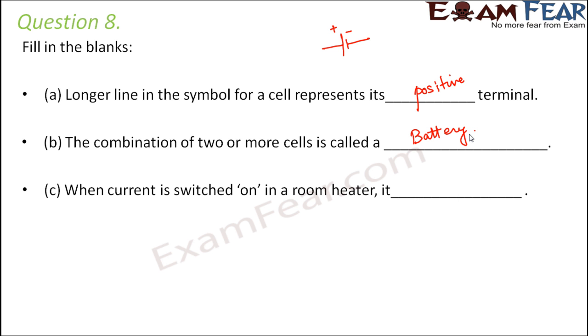When current is switched on in a room heater, it dash. In a room heater, we have the heating element. Whenever we switch on the current, the current produces heat. As a result, what happens? Heat is released. So, it produces heat.